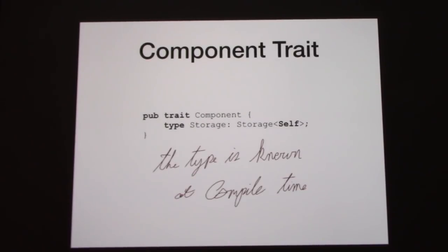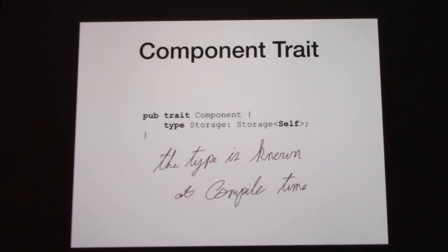The advantage of this is the type is always known at compile time. Going back to the earlier example with loggers, this goes one layer deeper. Every time you see a uint, you know it's always going to be stored in a specific type of vector. Your velocity vector will always be stored in a dense, sparse, or hash map storage. You always know about that at compile time.